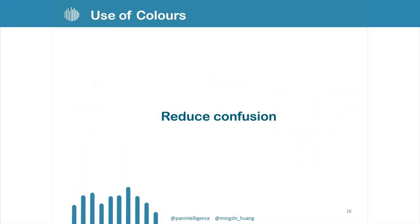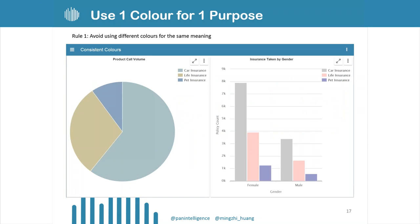Knowing all of this, we want to reduce some confusions. We want to use one color for one purpose. Rule number one, we want to avoid using different colors for the same meaning. If we already have pet insurance being blue, we probably don't want to have a different color to represent pet insurance on the right. Then people don't need to understand the information again.